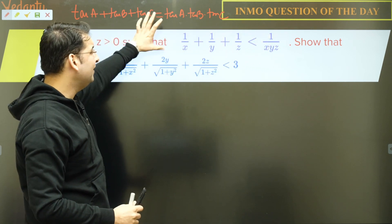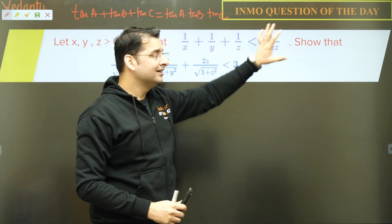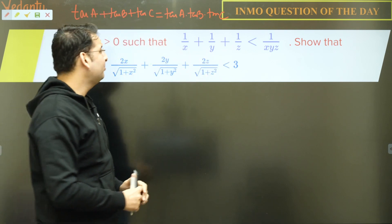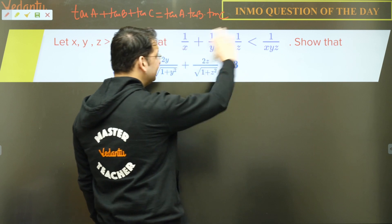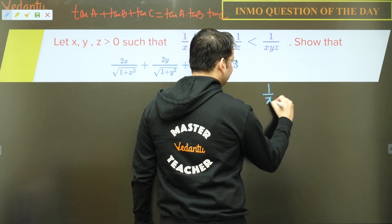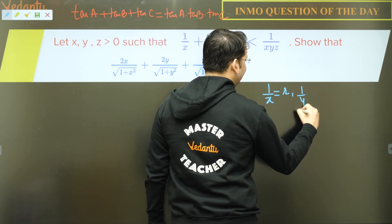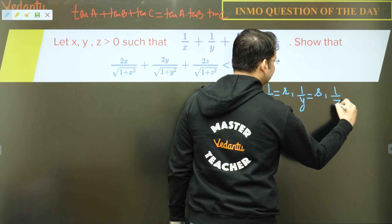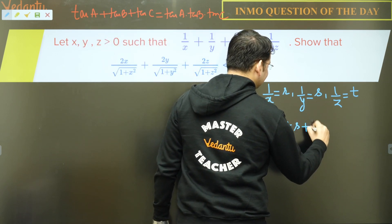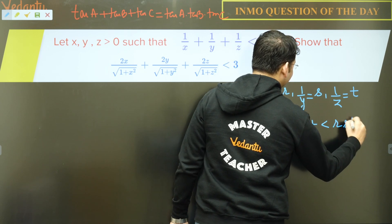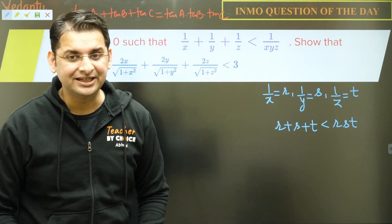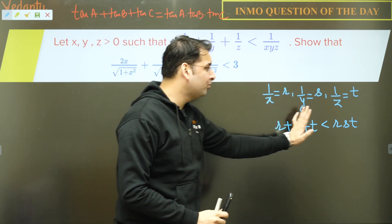We can see something similar in our given condition. Let us substitute R = 1/x, S = 1/y, T = 1/z. Then we have R + S + T < R·S·T. If there were an equals sign, we could directly put R = tan A, S = tan B, T = tan C. But since it is not equal, we introduce a variable α where R + S + T = α²·R·S·T, with α < 1.